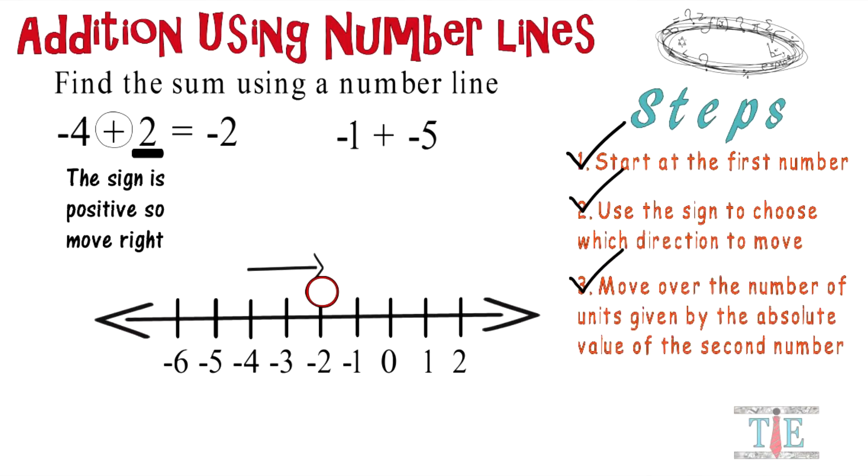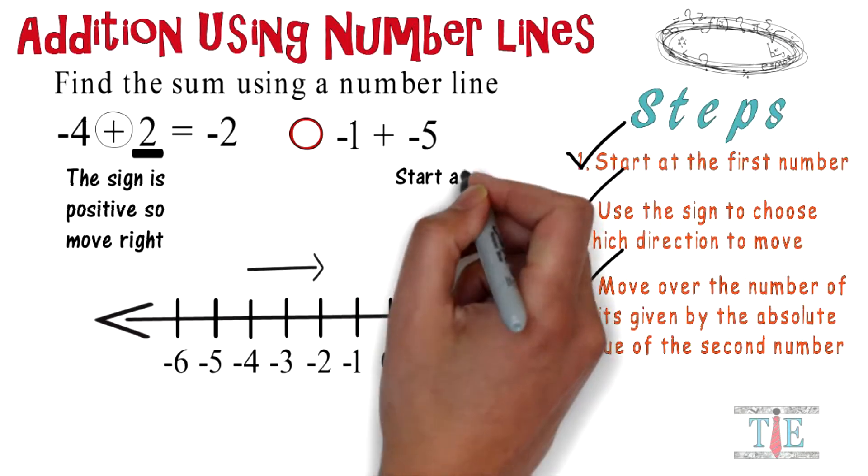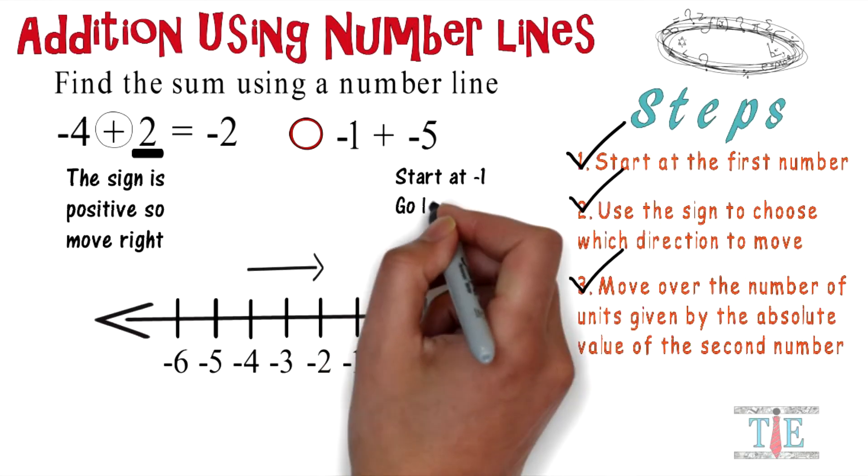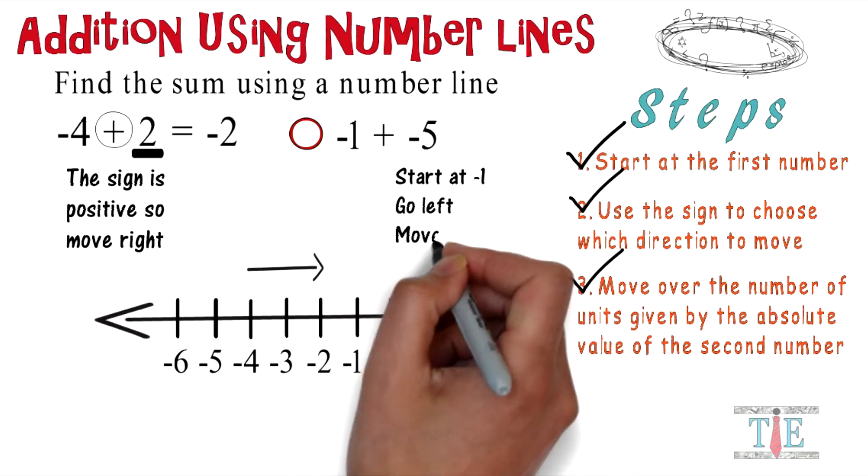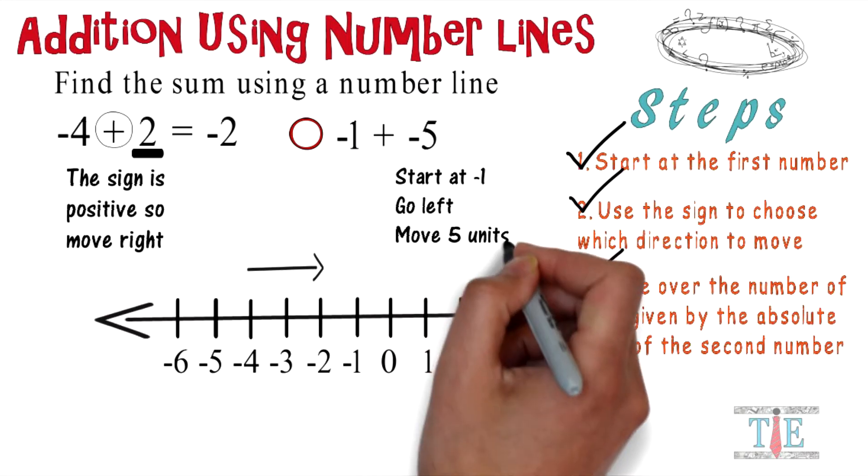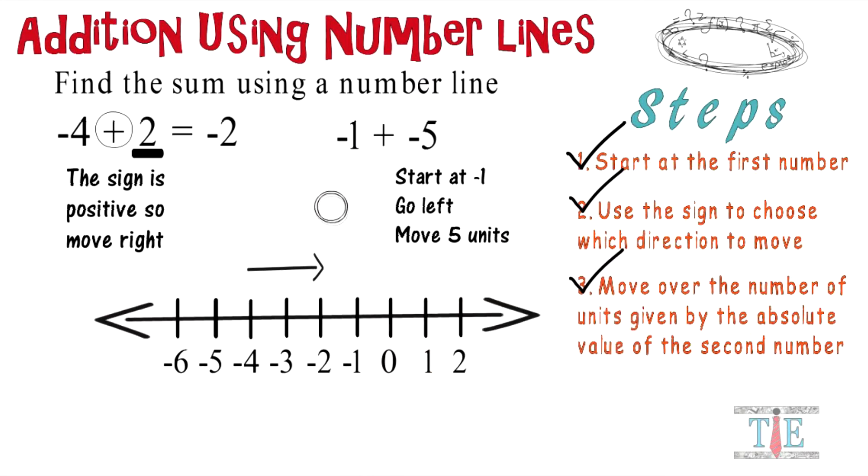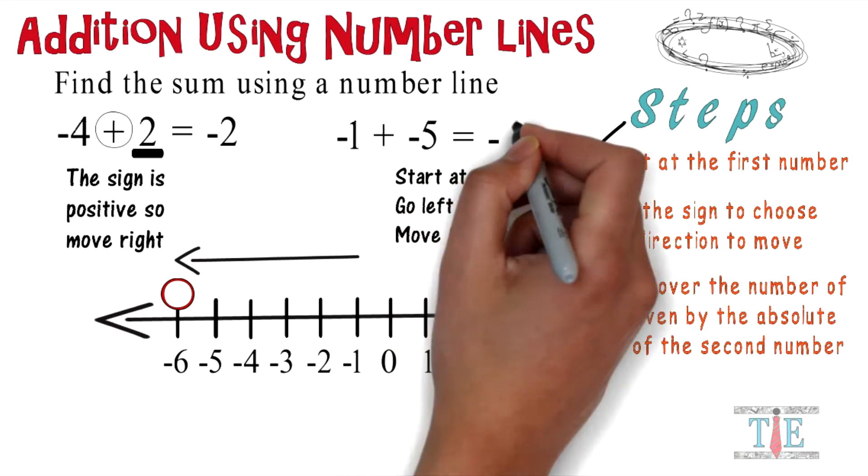Now let's try again with the next problem: negative 1 plus negative 5. What's our first step? Let's start at negative 1. We're gonna go left because it's a negative 5, and we're gonna move over five units. We move to negative 1, we're gonna go in the left direction, and we're gonna move over five units. We make our way all the way down to negative 6. Negative 1 plus negative 5 equals negative 6.